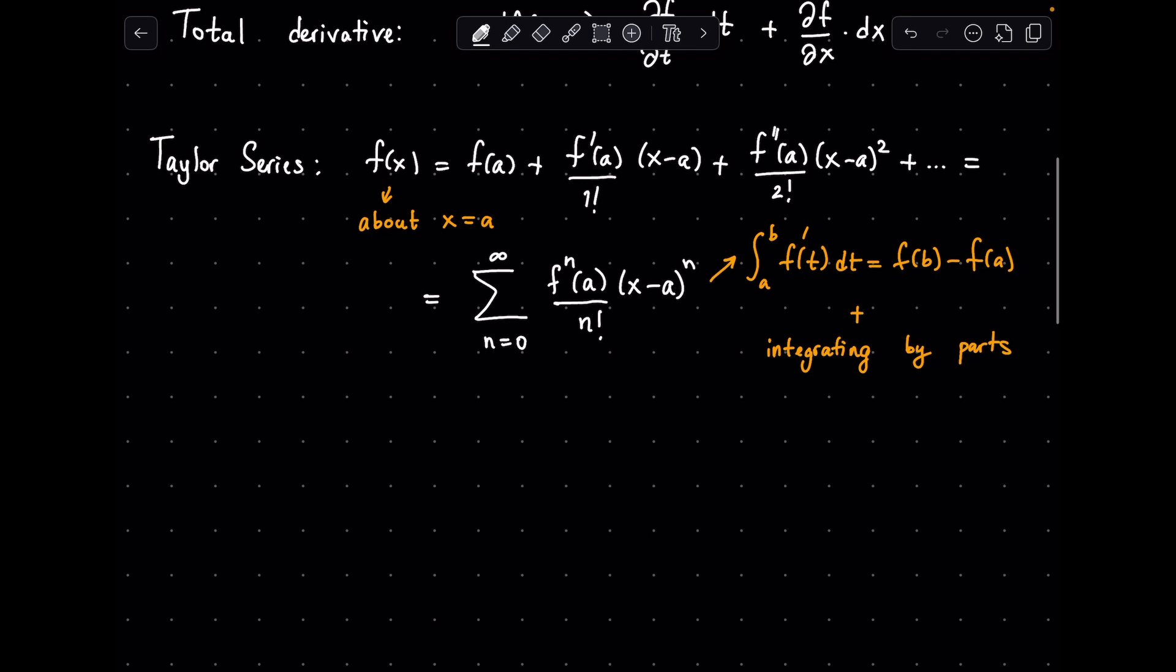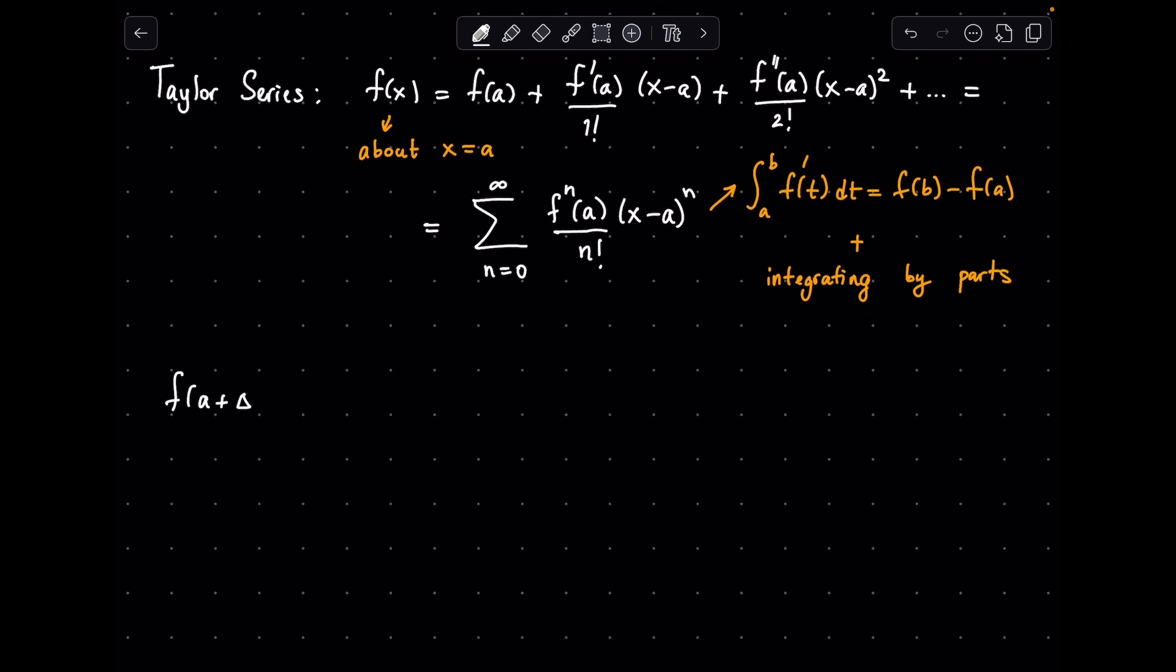Now, if we want to expand the same function around a plus a small delta x, then the x minus a terms simply become delta x. Then we take the f of a to the other side to obtain delta f as such.